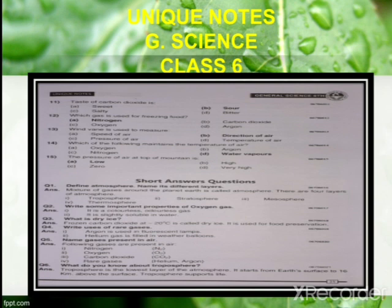Question 1: Define atmosphere and name its different layers — there are three different layers. This is a really important short question for annual and term exams. Question 2: Write some important properties of oxygen gas. Question 3: What is dry ice? — an important short question. Question 4: Write uses of rare gases. Question 5: Name gases present in air — an important short question. Question 6: What do you know about troposphere? — another important short question. Now we will move to the next page.